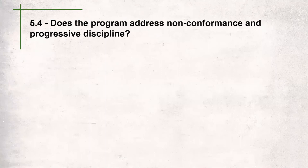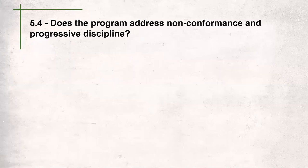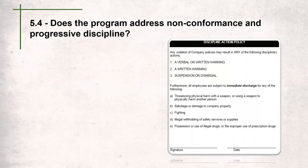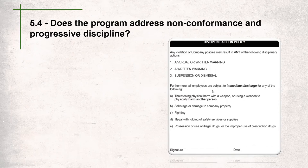Question 5.4 asks: does your program address non-conformance and progressive discipline? Companies must have a progressive discipline policy to meet the core standard. This policy lays out a framework for handling discipline and the specific steps that will be taken if a rule is broken. In this example, the company has a three-step process: verbal, written, and then suspension or dismissal. They also have rules subject to immediate discharge. This would be a good example of addressing non-conformance and progressive discipline.